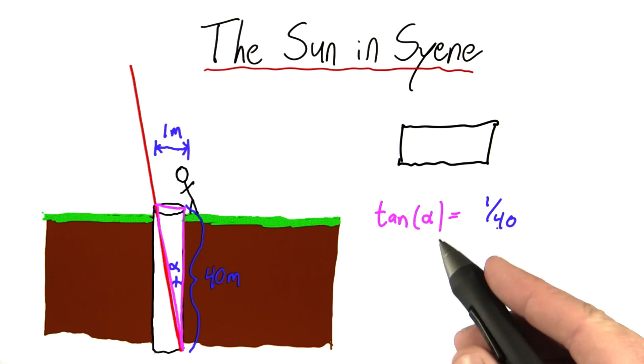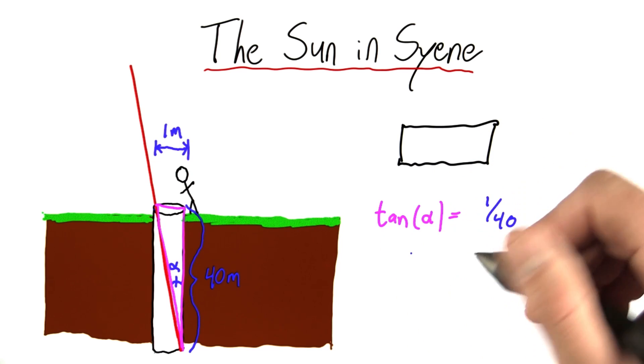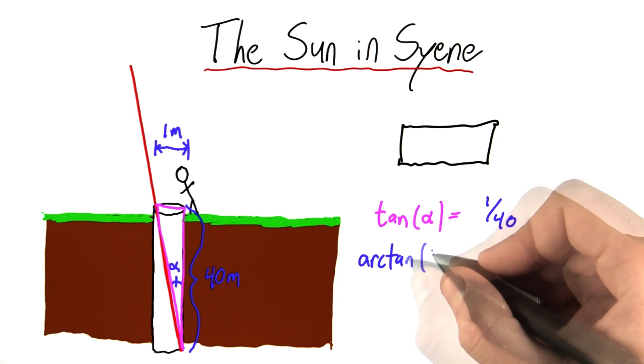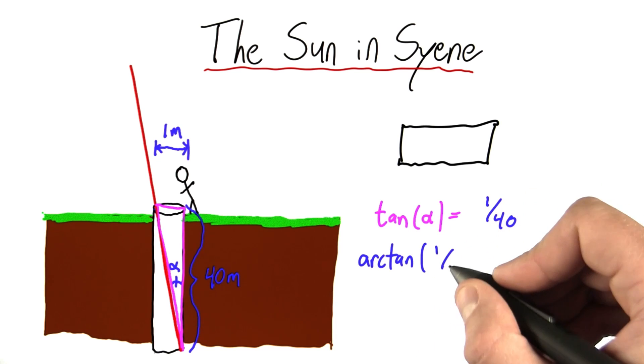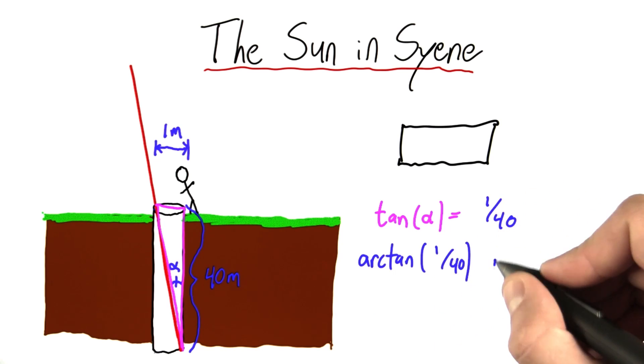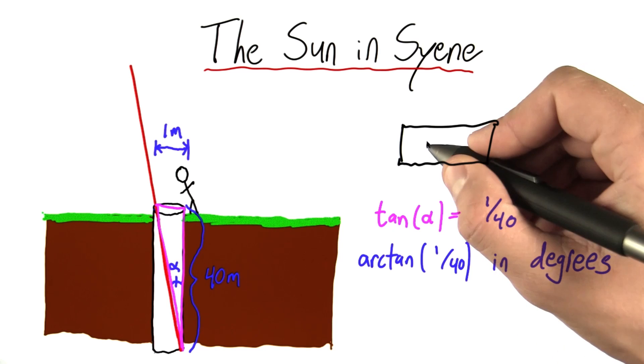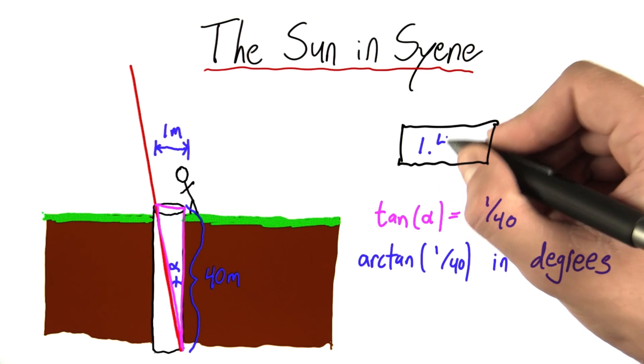Now, I want to know what's alpha. Well, to figure this out, I'm going to type into Google, arctan of 1 over 40 in degrees. And the answer I get is 1.4 degrees.